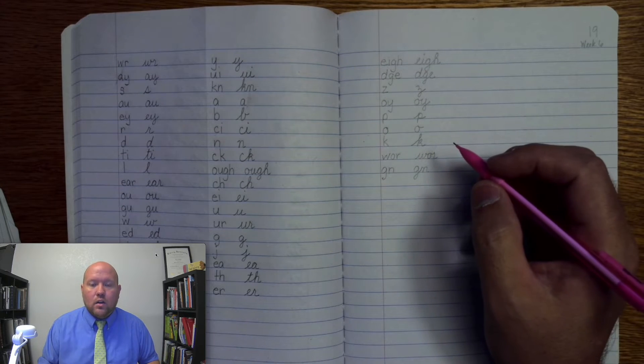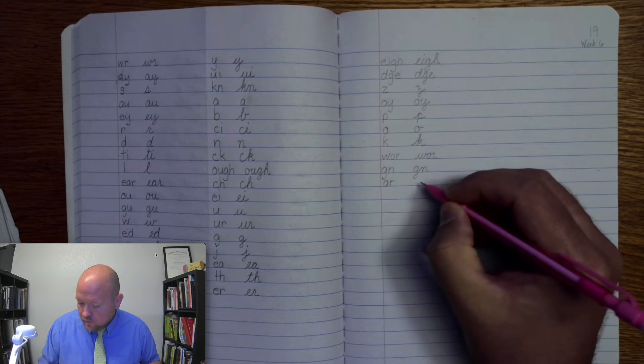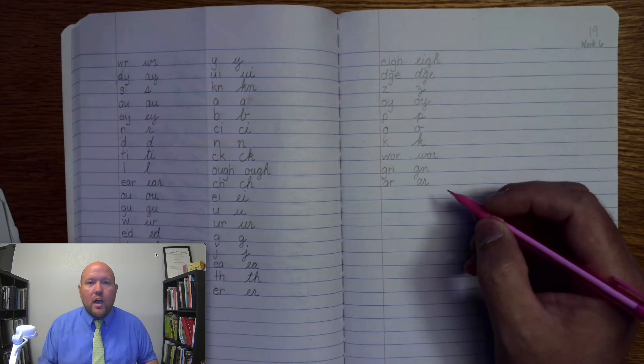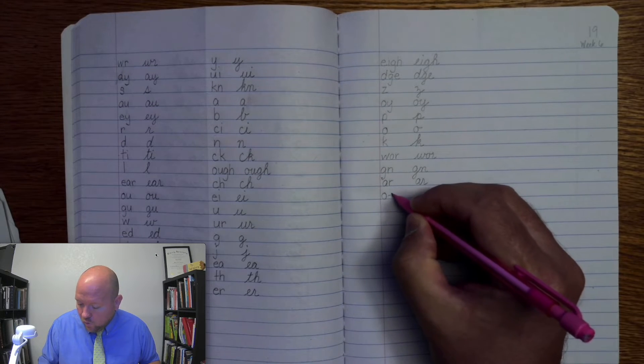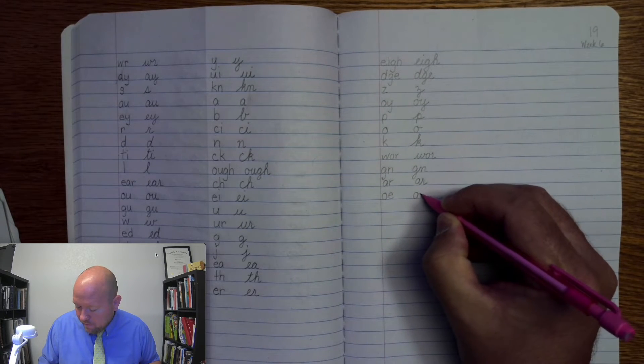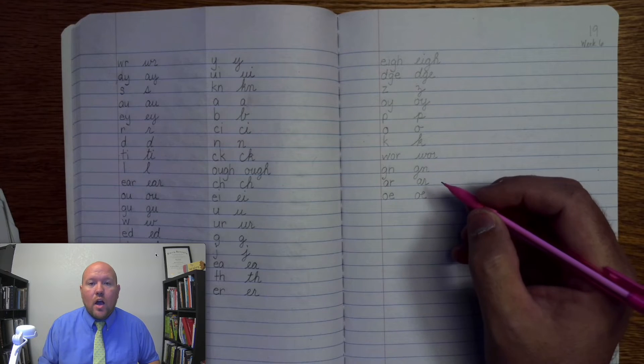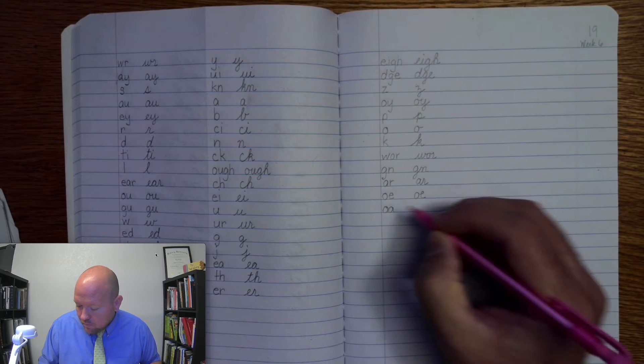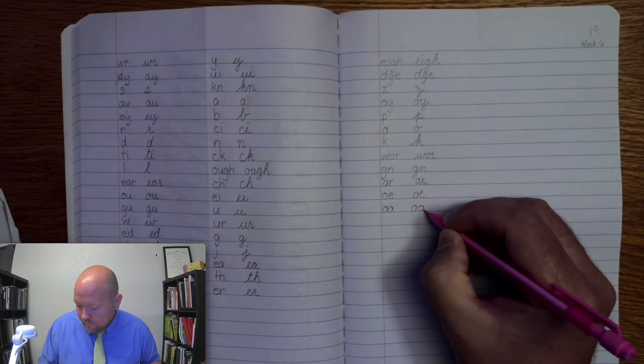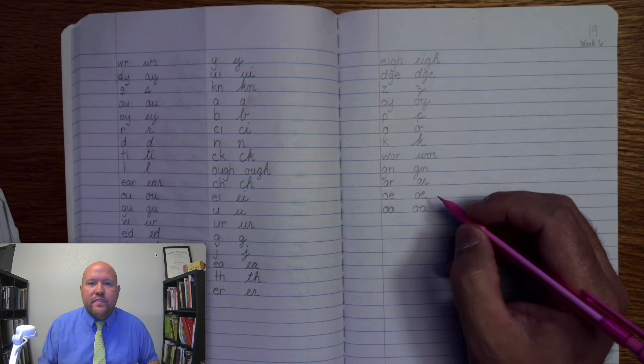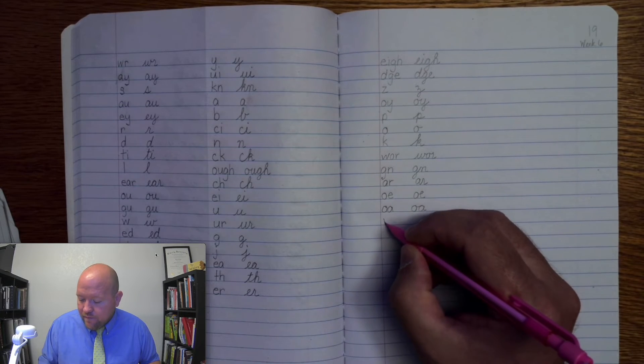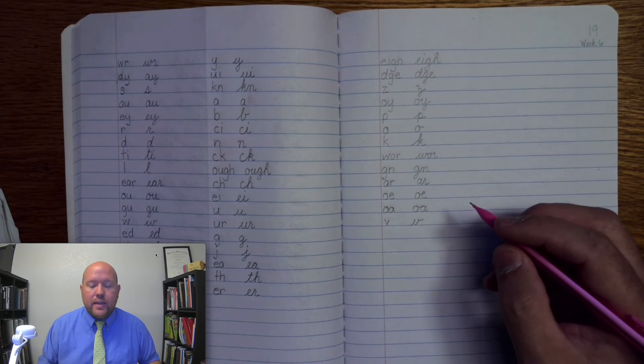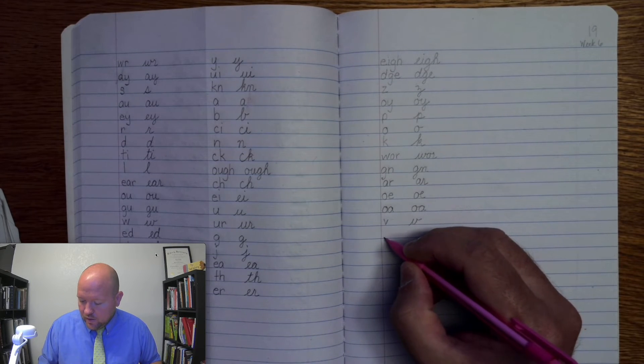O. Boat, O, boat. Next one: V, V. Next one: E, E, E, E.